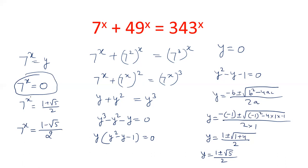7 power x equals 1 plus root 5 by 2 is possible. And 7 power x equals 1 minus root 5 by 2 is not possible because this will always be a positive value while this is a negative value. The only possible value for 7 power x is 1 plus root 5 by 2.